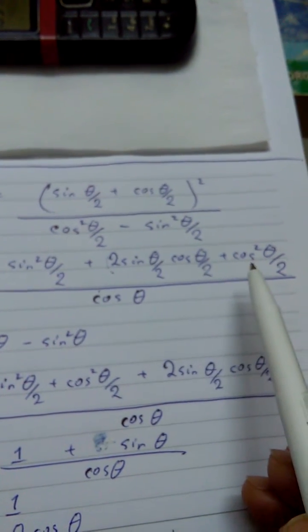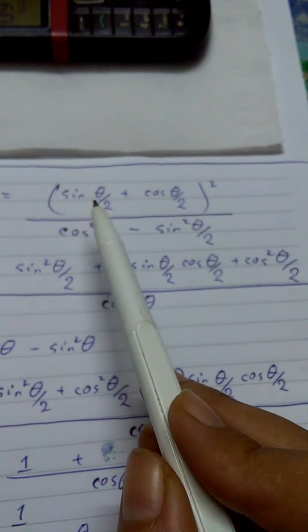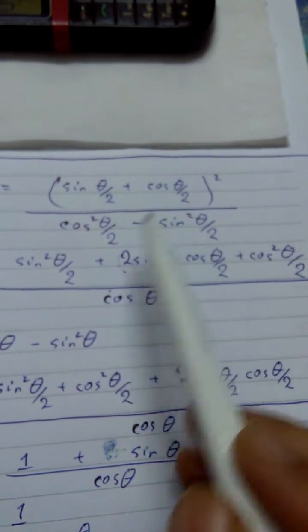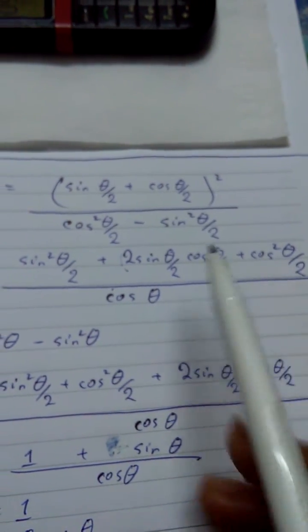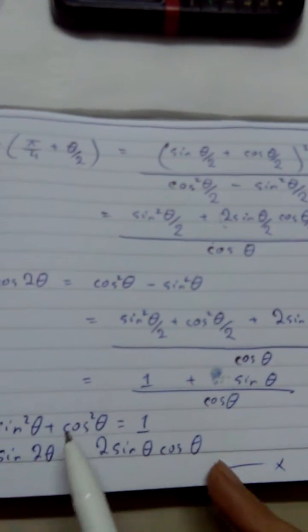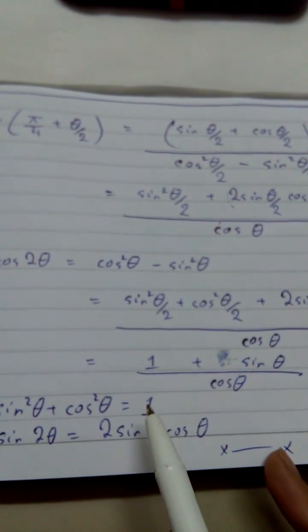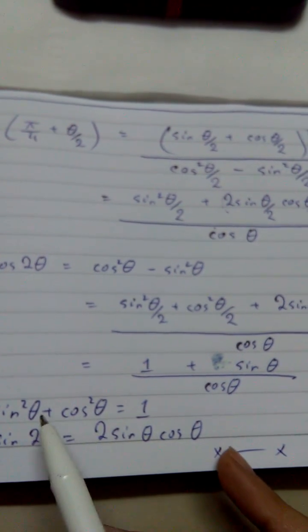It is a² plus 2ab plus b². If you take sin θ/2 as your a and cos θ/2 as b, then this thing can be written in this way. Now you know the basic formula that sin² θ + cos² θ equals 1.